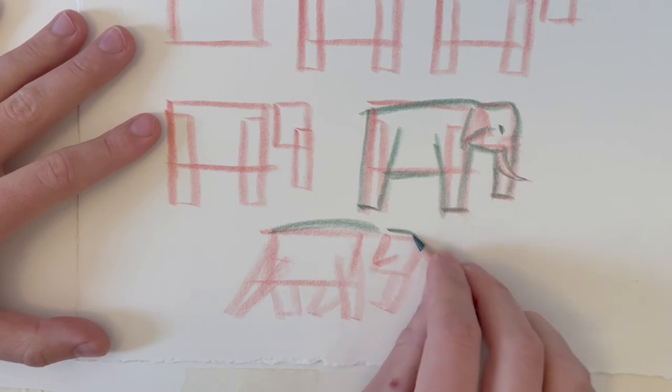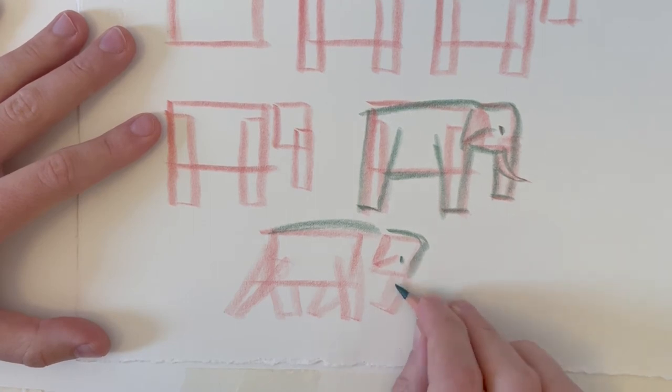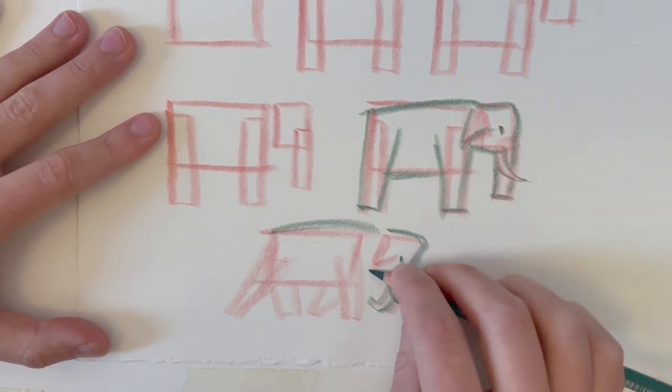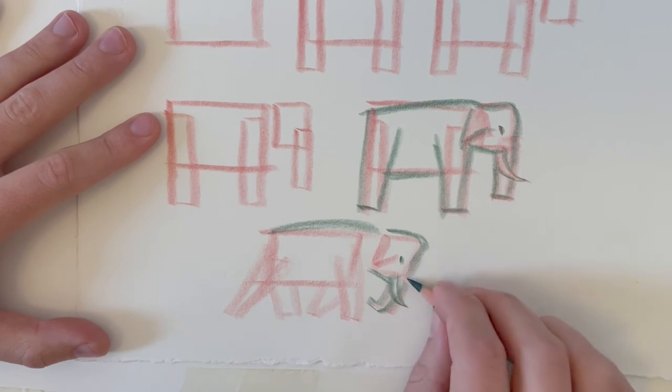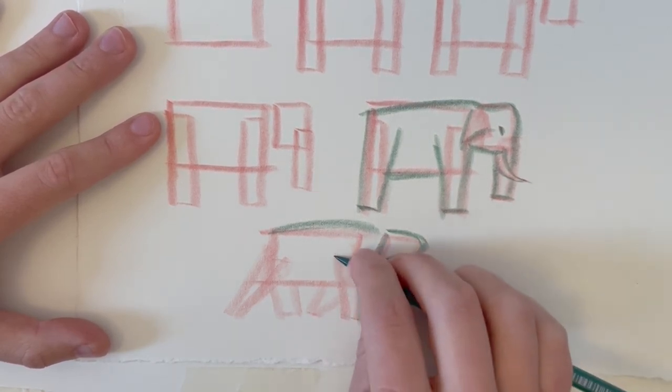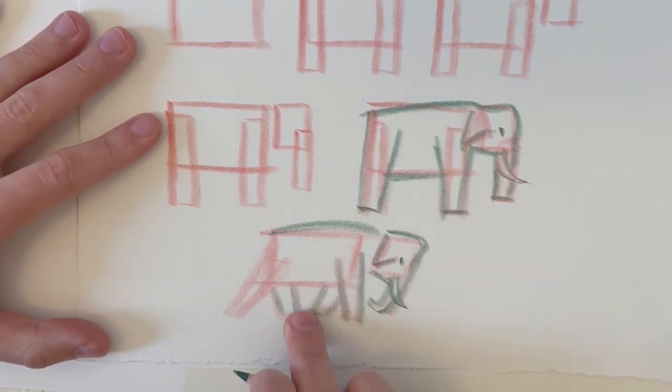I think the head's going to be a bit like this. The eye would probably be about there. The tusk is probably going to be here. Yeah. That shoulder.